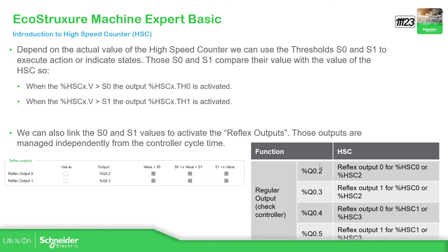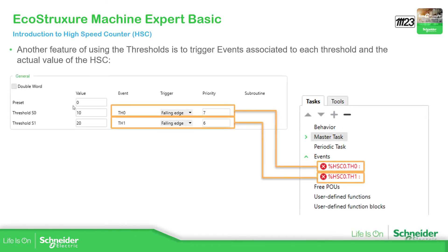For the reflex output, there are specific outputs available. You can see in the graphic the reflex output for high-speed counter zero, and others depending on whether you're using the encoder or single phase — the logic comparison is made here. The threshold events allow you to specify the priority and how to trigger the event based on the configured threshold.